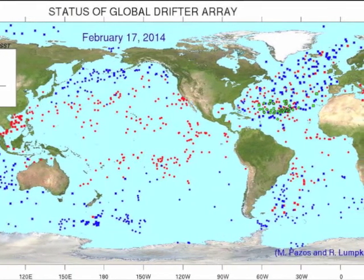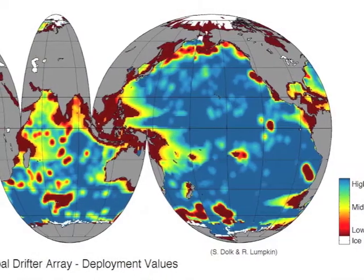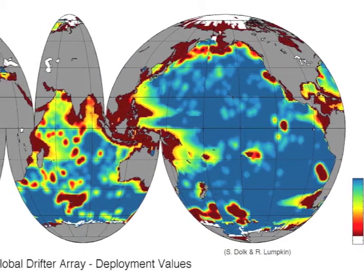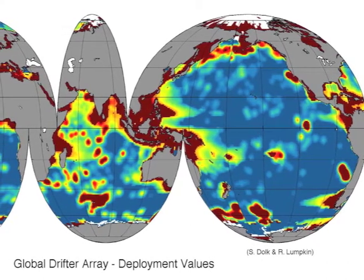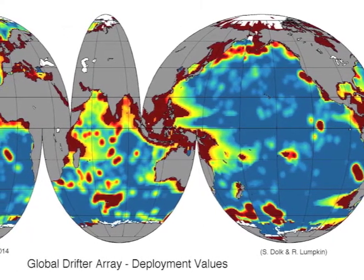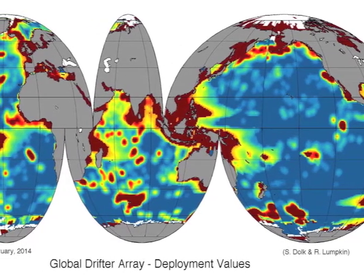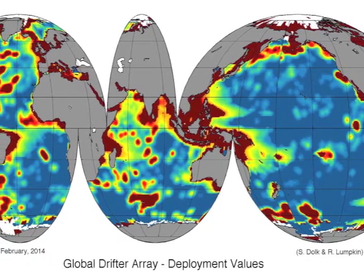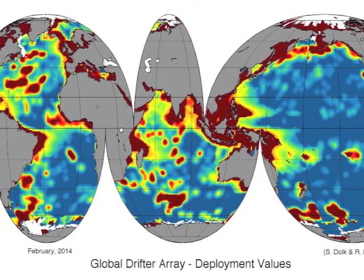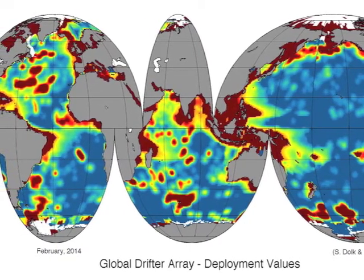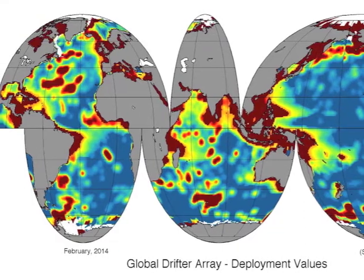We incorporate the number of functional sensors and the age of each drifter to generate the Drifter Deployment Value Map, which we created here at AOML. The value map tells us where we need drifters based on these sensor and age criteria. Blue represents areas where drifters are needed — high-value deployment locations — whereas areas in red represent either shallow ocean basins or areas where we currently have high-value drifters transmitting quality data. One of the main goals of the drifter program is to achieve spatial coverage throughout the world's ocean, with one drifter approximately every 350 square miles. To do so, we collaborate with numerous agencies around the world and use tools such as the Drifter Deployment Value Map.